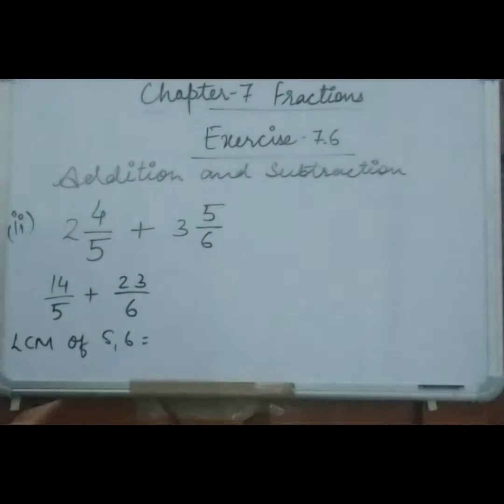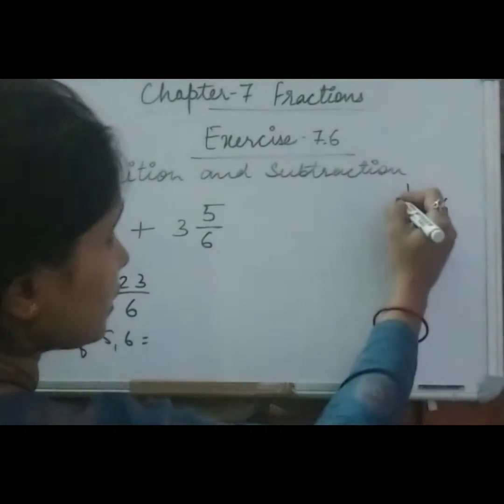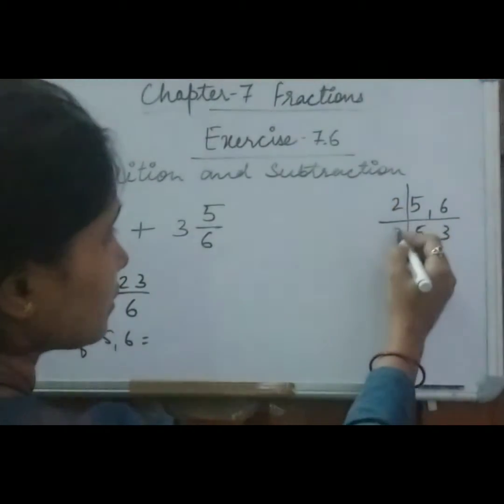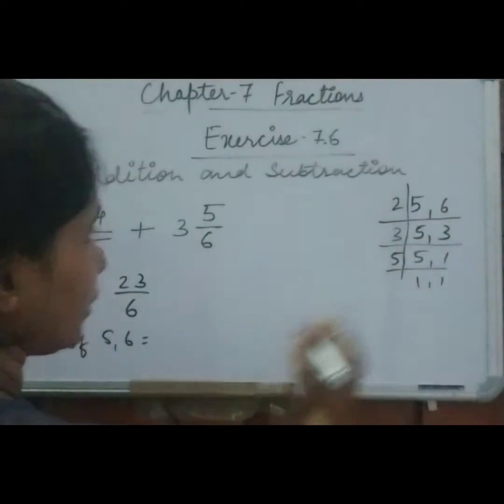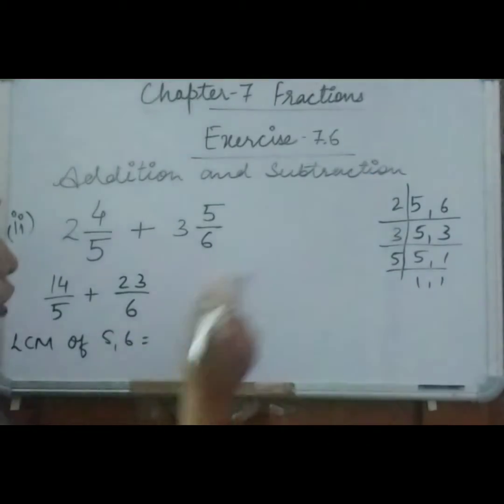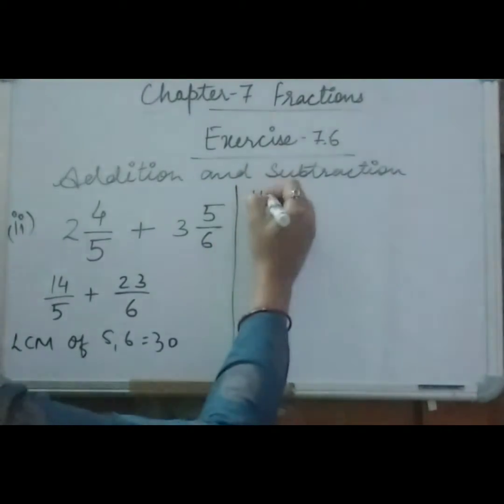So here we will take LCM of 5 and 6. So LCM will be 5 comma 6. 2 times 3 is 6, 3 times 1 is 3, and 5 times 1 is 5. So this is 2 times 3 is 6, 6 times 5 is 30. So what we have to do here? We will just make this 5 as 30 and this 6 also 30. So how we will make them? We will just multiply.